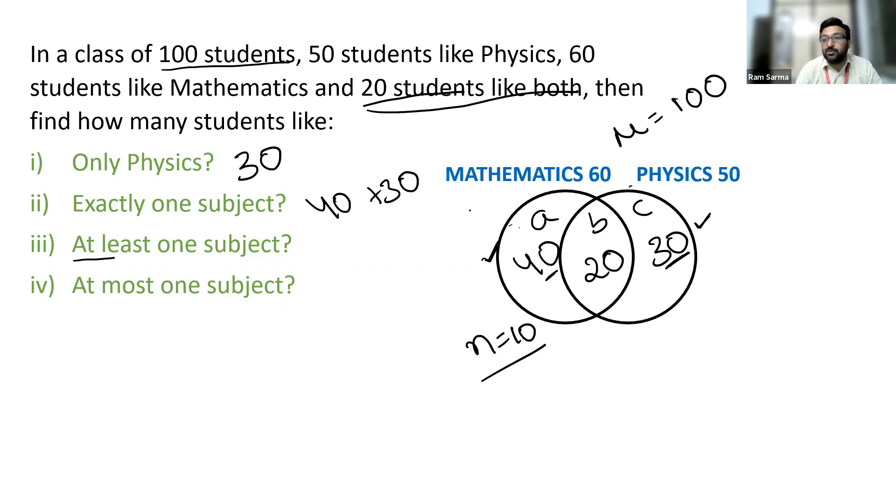At least one subject. At least one. It means that exactly one or more than one. One or more than one. As we discussed earlier, 70 members like exactly one subject and people who like more than one. That's 20.